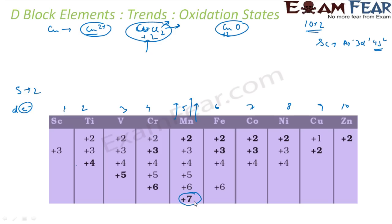If you see, the maximum is plus 7, then again it decreases — plus 6, plus 4, plus 2. From plus 3 it becomes plus 7, then again it decreases in this direction. Why? Because the unpaired electrons are unstable and eager to form bonds with other chemicals. Therefore, the oxidation state will be highest in the very middle, because the number of unpaired electrons is maximum.